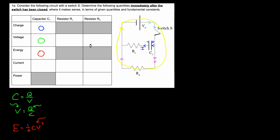The voltage across R2 is the entire V₀. For R1, we do a loop through the battery, C1, and R1. There's no voltage across C1 initially — it's as if it's a wire — so the entire drop has to be across R1. All voltage gains and drops add up to zero: I gained V₀, nothing through C1, so R1 also gets the entire V₀. The current through R1 is V₀ over R1, and similarly the current through R2 is V₀ over R2.